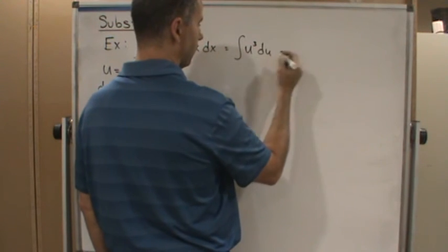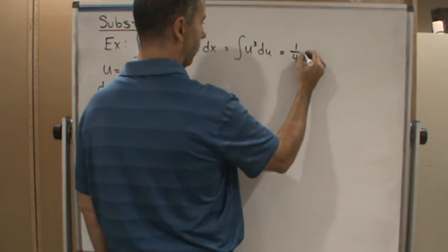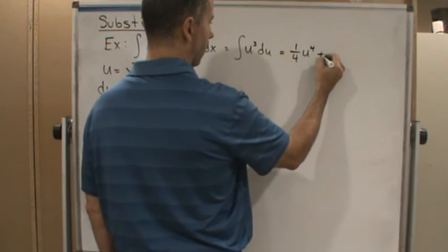Because then I just use the power rule, and so it's going to be one-fourth u to the fourth plus c.